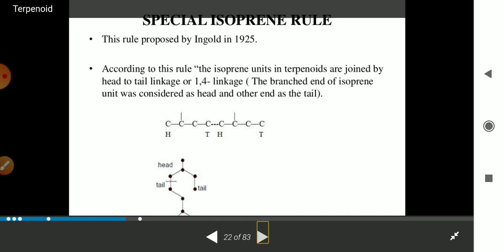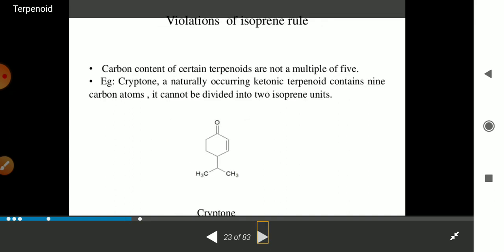The branched end of the isoprene unit is considered the head and the other end the tail. Here you can see the head denoted by H and the tail by T. Head-to-tail bonding is present in terpenoids.